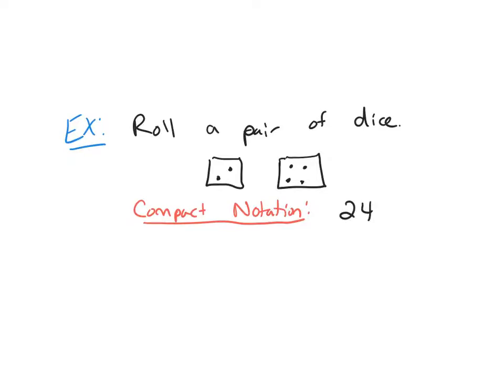What this represents is the first number is the outcome from the first die, and the four is what came out on my second die.